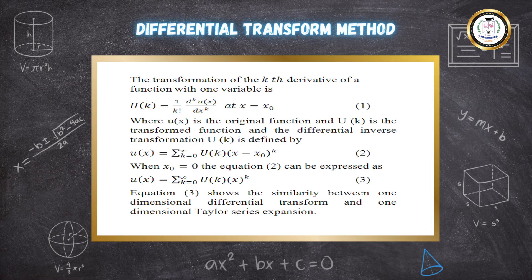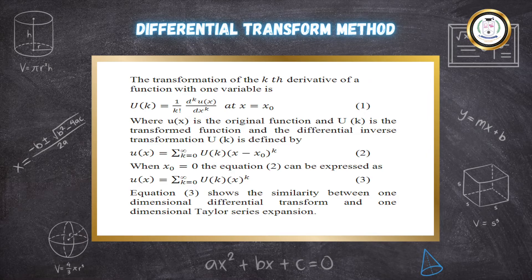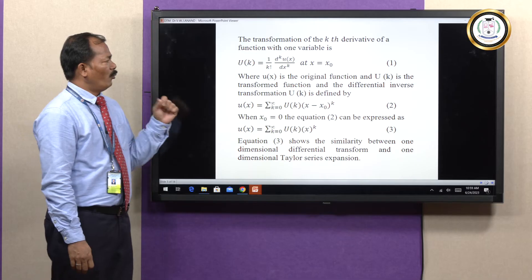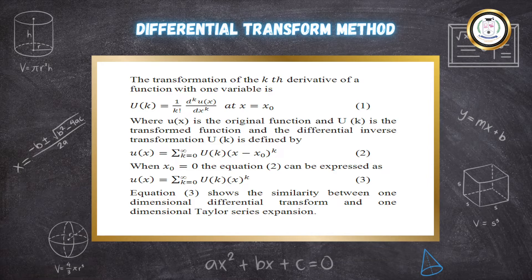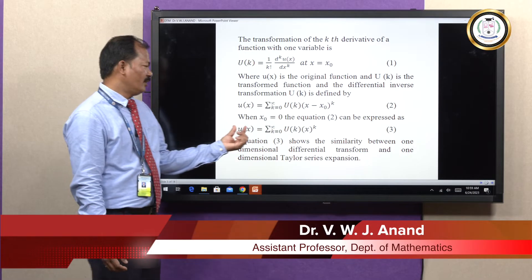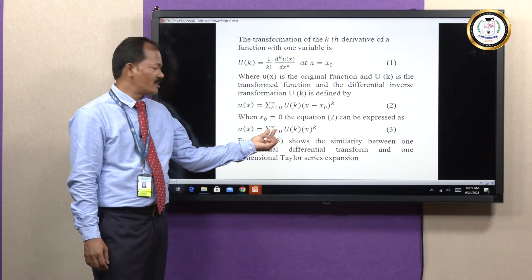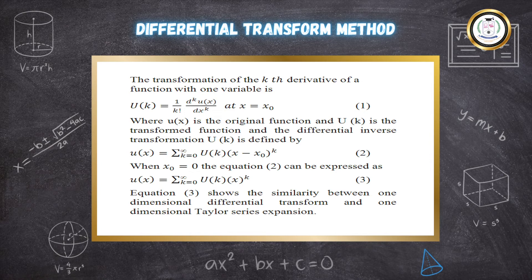Definition: small u of x is the original function and capital U of k is the transformed function, which is defined as U of k equals 1 upon k factorial into the k-th derivative of u of x with respect to x, evaluated at x equals x-naught. The original function u of x is defined as the summation from k equals 0 to infinity of capital U of k into (x minus x-naught) raised to the power k. When x-naught is 0, we get the series solution u of x equals summation from k equals 0 to infinity of U of k times x to the power k. Equation 3 and the Taylor series solution for one dimension are one and the same.